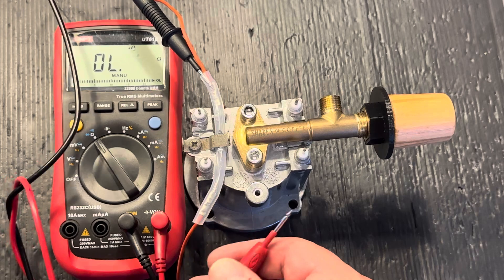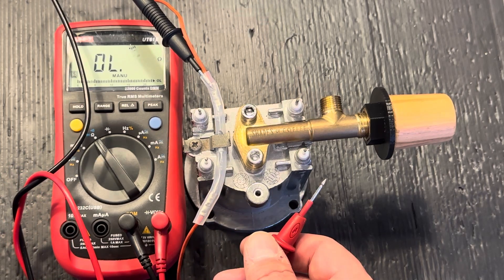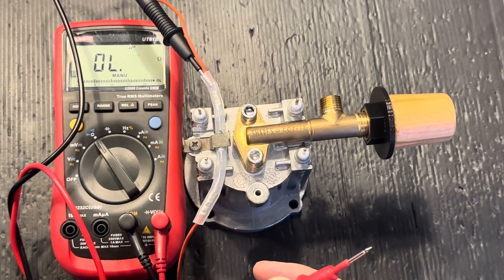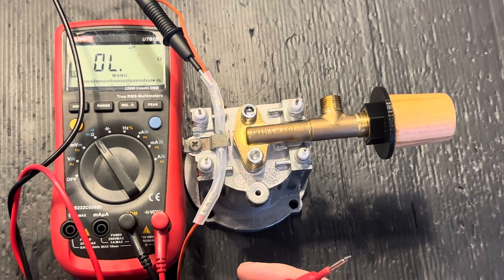There you go, there's a very quick example of how to check the thermal fuse on a Gaggia aluminum boiler.